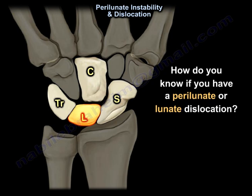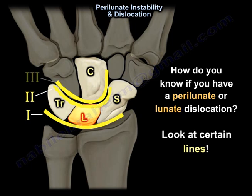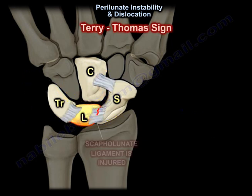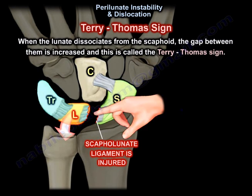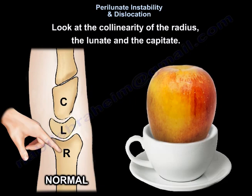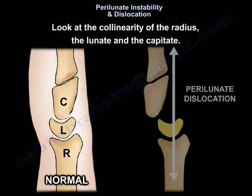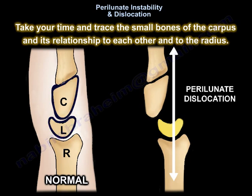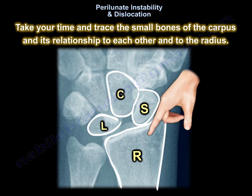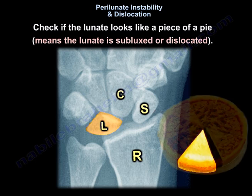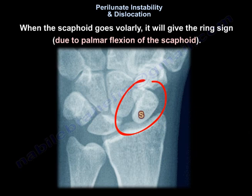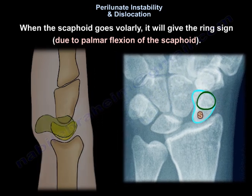To diagnose a perilunate or lunate dislocation, you look at certain lines — the Gilula lines, and the Terry-Thomas sign, which is the gap between the scaphoid and the lunate. You look at the collinearity of the radius, the lunate, and the capitate. Take your time tracing the small bones of the carpus and their relationship to each other and to the radius. Check if the lunate looks triangular — like a piece of pie — which means it is subluxed or dislocated.